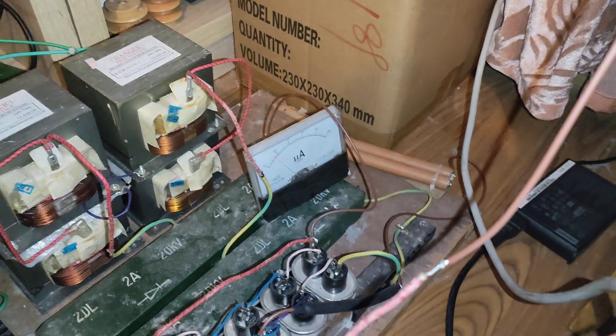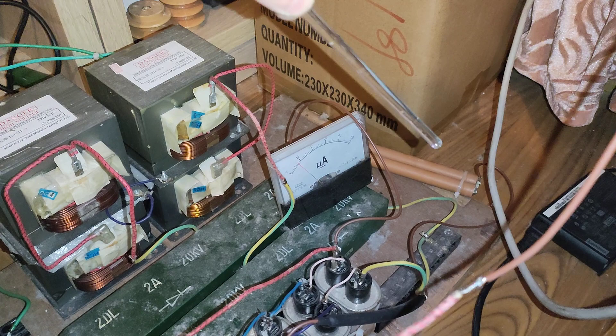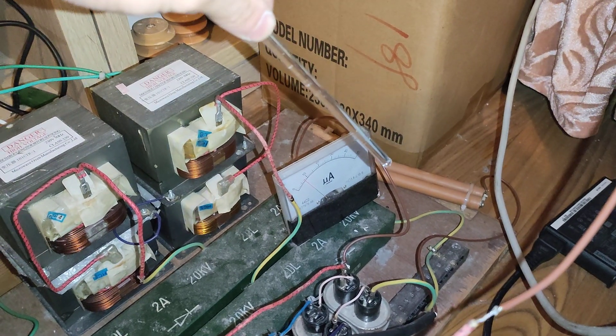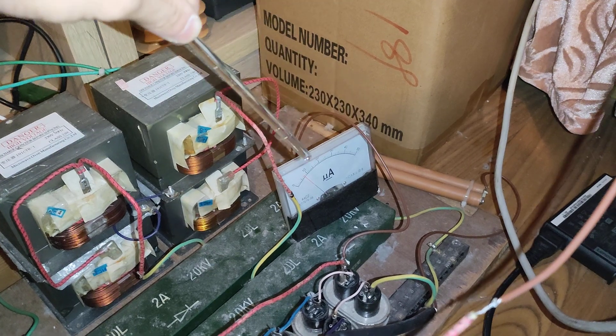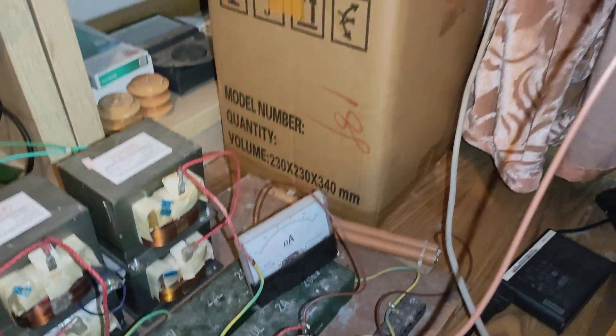As you can see, micro amp meter in series with 100 megaohm resistor. So the high tension is around 0.8 kilovolts.